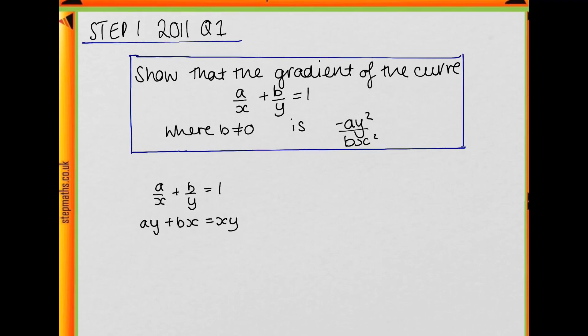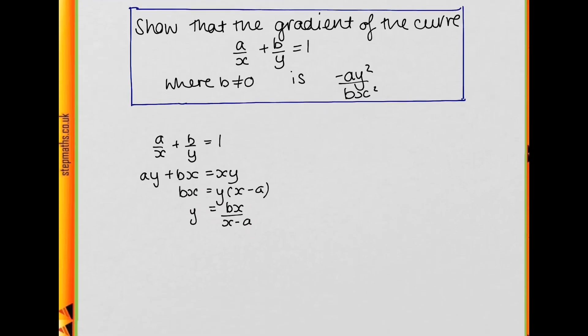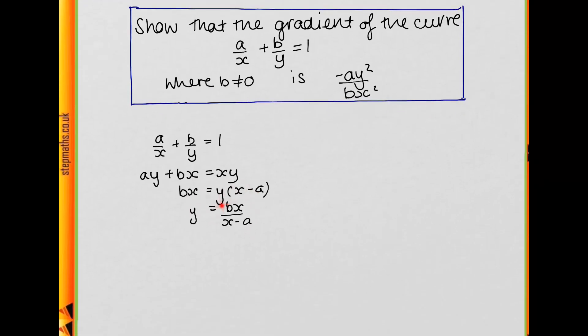I'm going to do the latter. We've got ay + bx = xy by multiplying through by xy. Then rearranging, we get bx = y(x - a), and y = bx/(x - a).